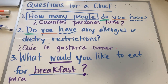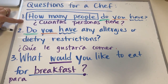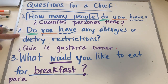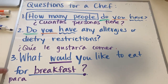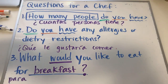What would you like to eat for lunch? What would you like to eat for dinner? So to review, we have: 'How many people do you have?' — cuántas personas tiene; 'Do you have any allergies or dietary restrictions?'; and 'What would you like to eat for breakfast, lunch, or dinner?' Copy these down and practice the pronunciation.